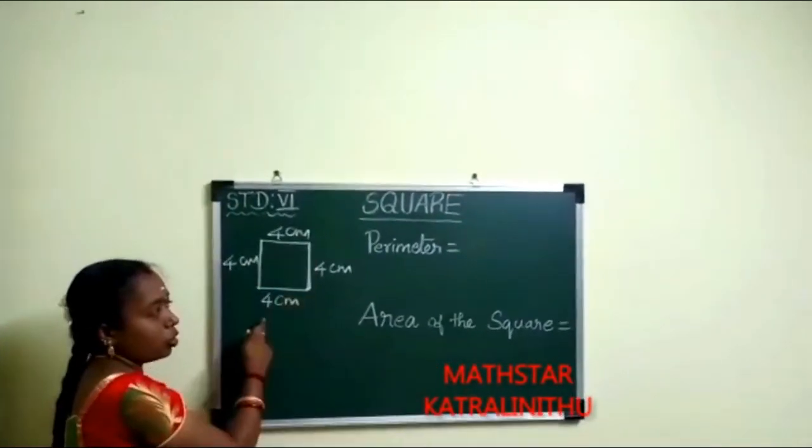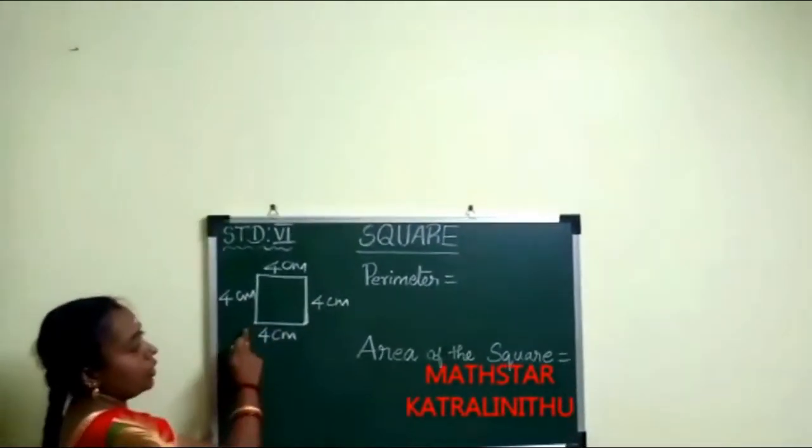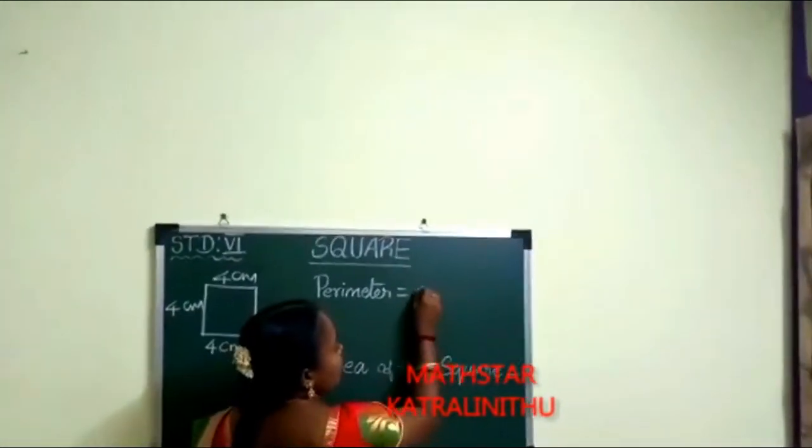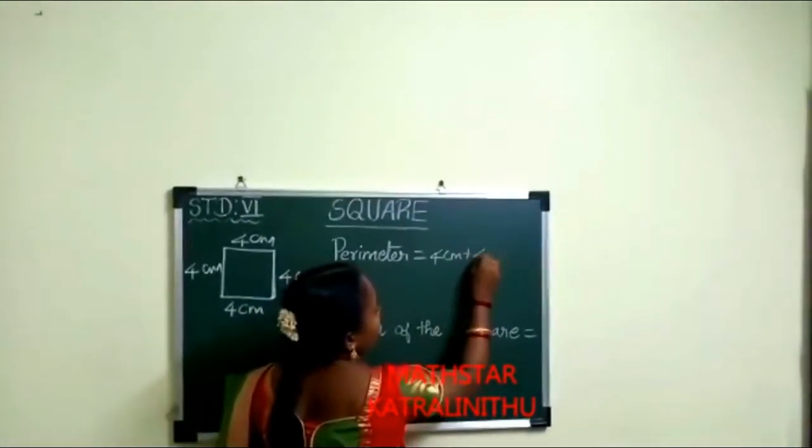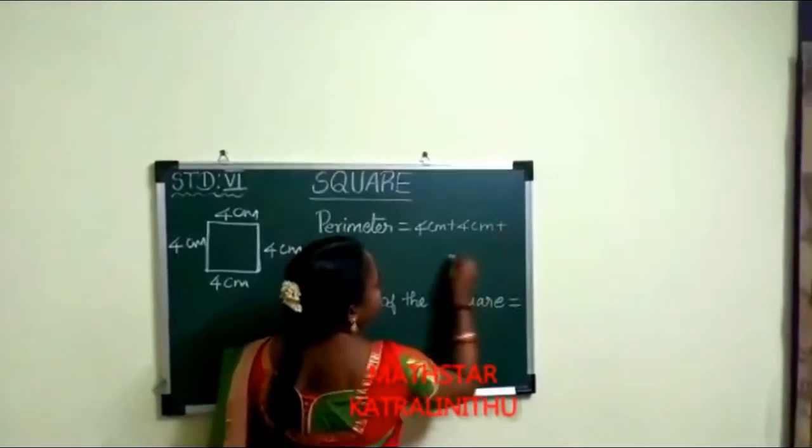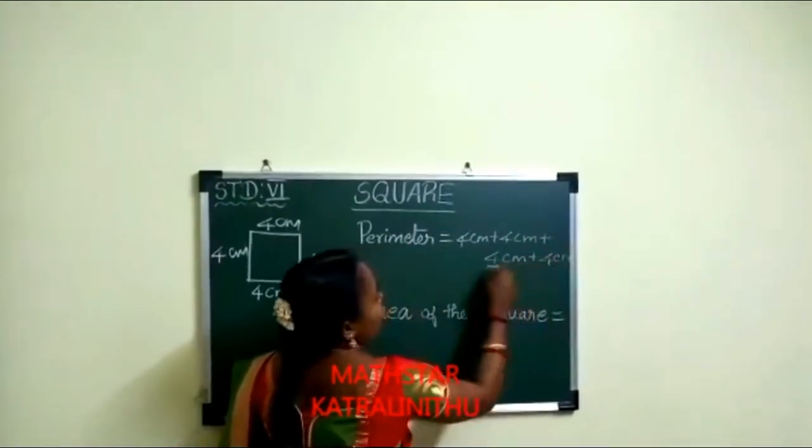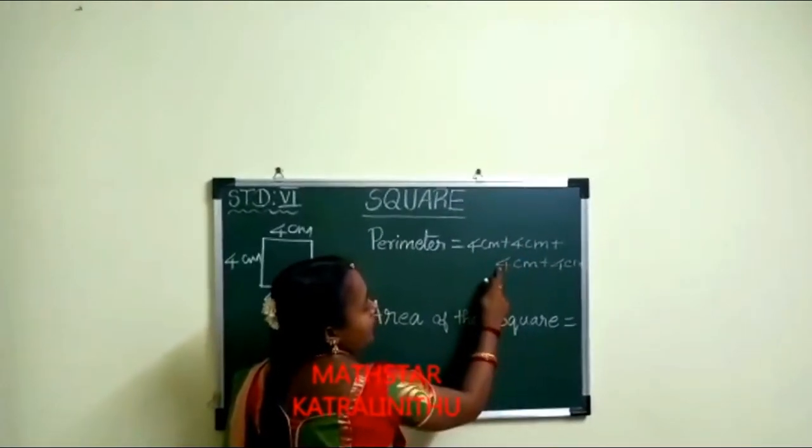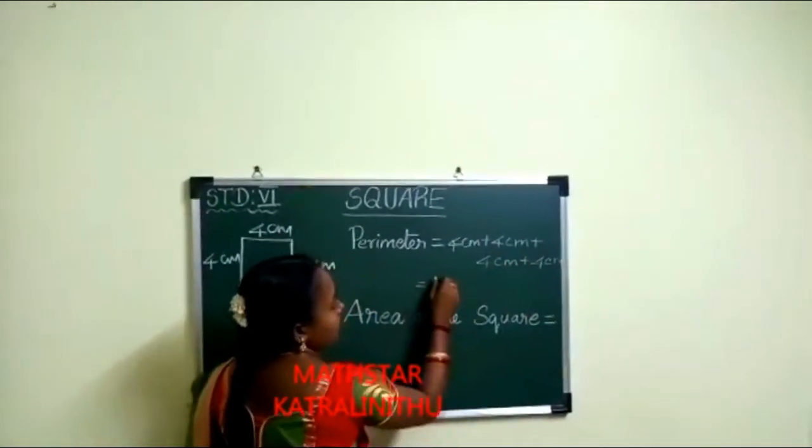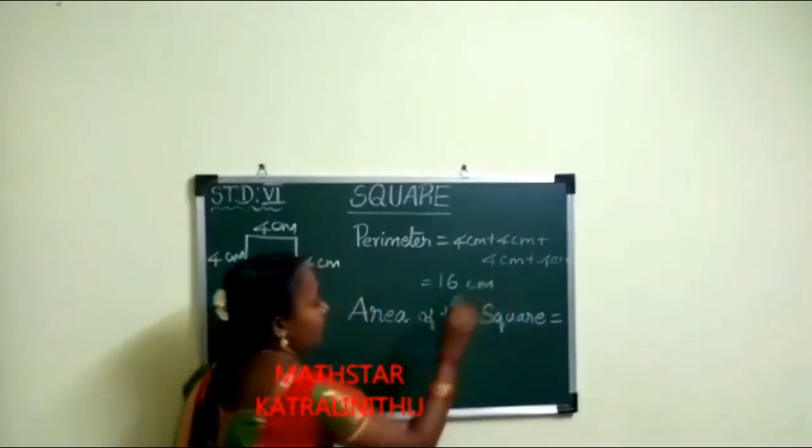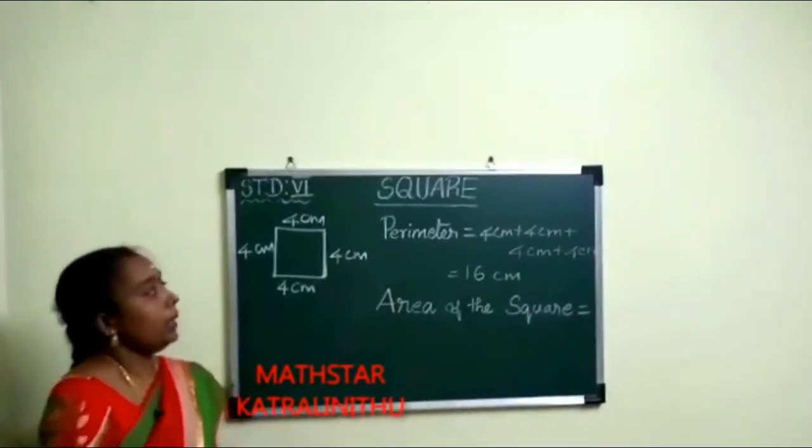We have one square shape given here. One side is 4 centimeter. So we add all the sides: 4 plus 4 equals 8, 8 plus 4 equals 12, 12 plus 4 equals 16 centimeter.